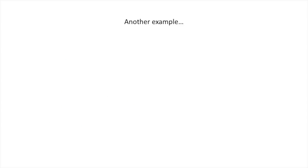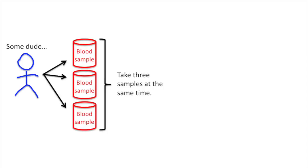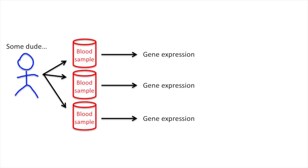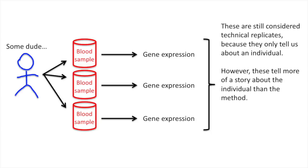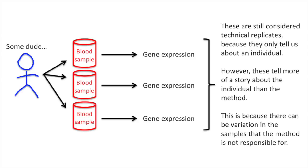Here's another example. Again, we start with some dude. However, now we take three samples at the same time, and we measure the gene expression in each individual sample. These are still considered technical replicates because they only tell us about an individual. However, these tell more of a story about the individual than the method, because there can be variation in the samples that the method is not responsible for.